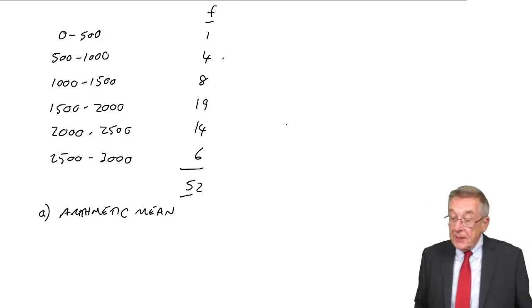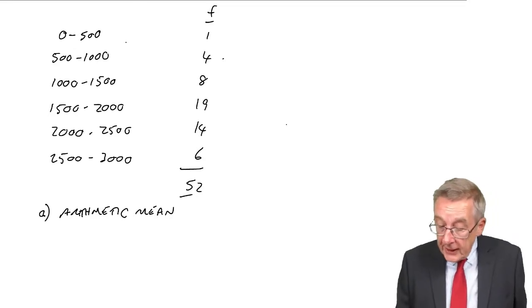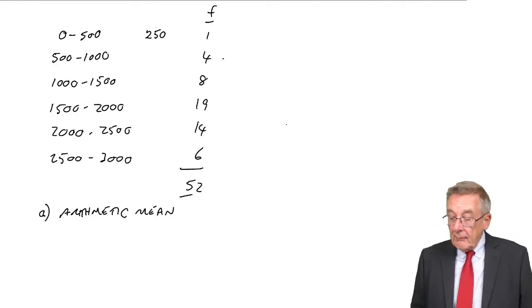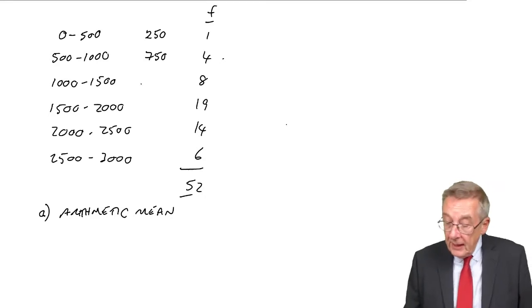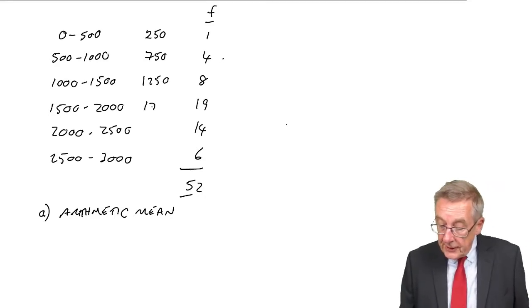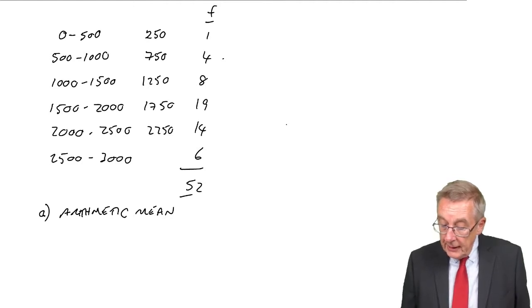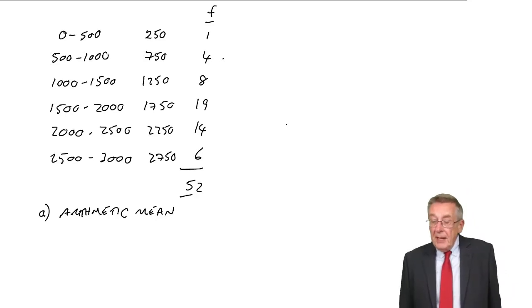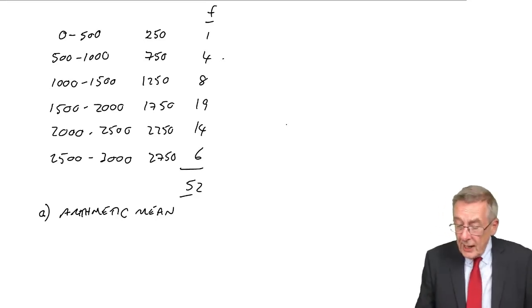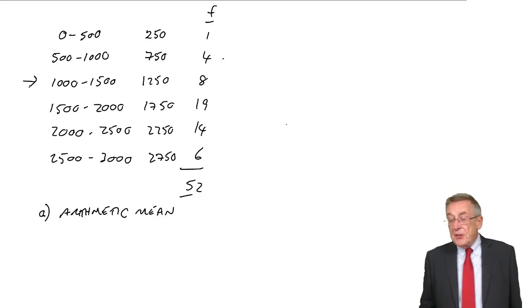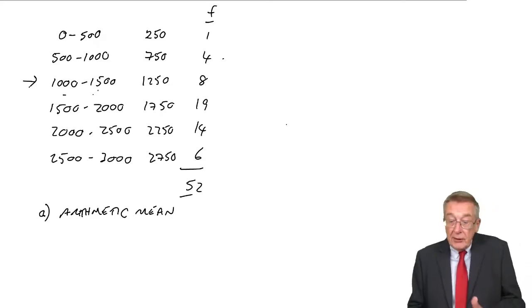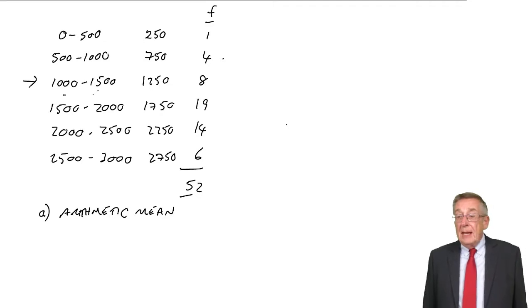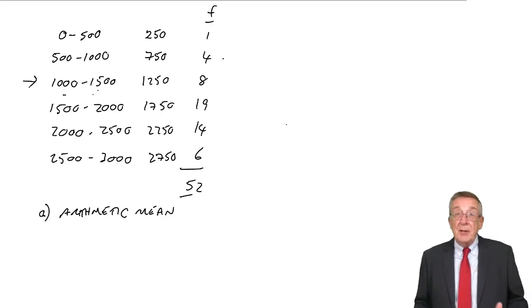Which does make it perhaps rather approximate. But we take the midpoint and we say, instead of 0 to 500, we take 250. Instead of 500 to 1,000, the midpoint is 750, halfway between them. 1250, 1750, 2250, 2750. So we're taking the midpoint, which if you think about it, in a sense, it means we're assuming those 8 were evenly spread between 1,000 and 1,500. And therefore, on average, they were 1250, which may not be the case, but we've no choice.